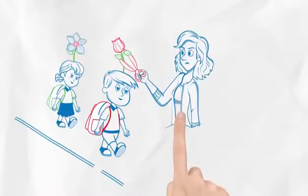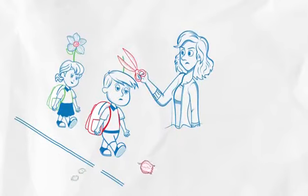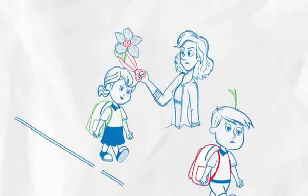Before children start going to school, every child is unique. Every child thinks different. But the education system makes every child think the same. This is the fundamental flaw in the education system.